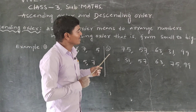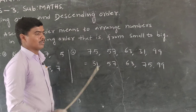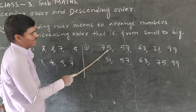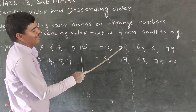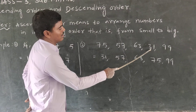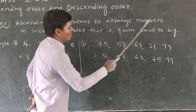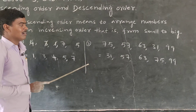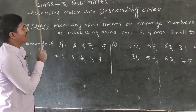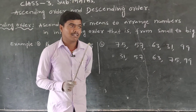Second example — all two-digit numbers. The numbers are 75, 57, 63, 31, and 99. The question asks to arrange the numbers in ascending order.